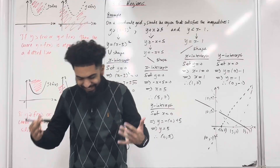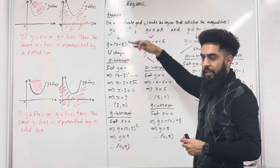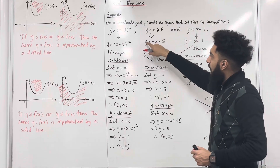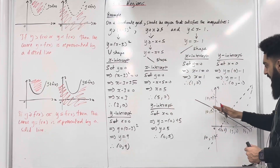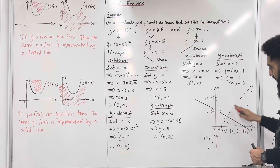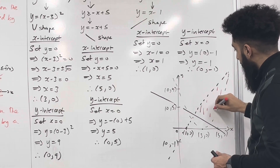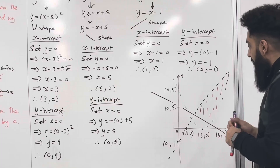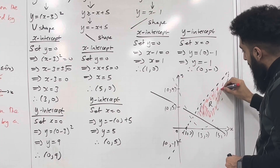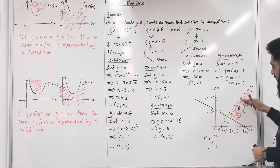Now we need to shade in the region. y is greater than x minus 3 squared — here's my curve, so I need to shade in everything above the curve. y is greater than or equal to minus x plus 5 — here's my line, so I need to shade in everything above the line. y is less than x minus 1 — here's the line, so I need to shade everything below the line. I can see that the overlap will be over here — that there is my overlap, which precisely represents the region R.